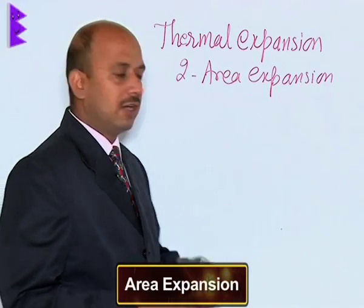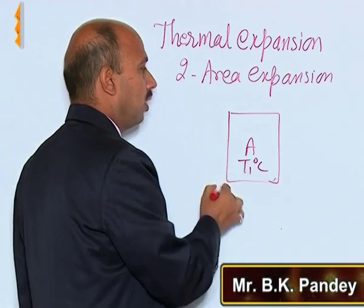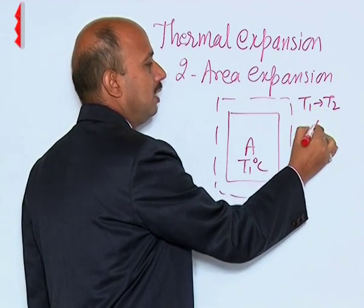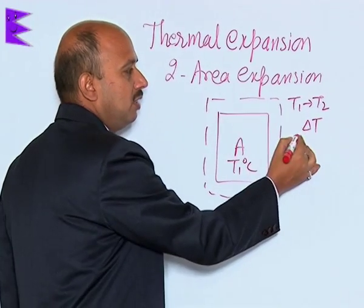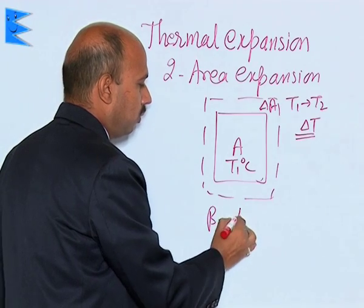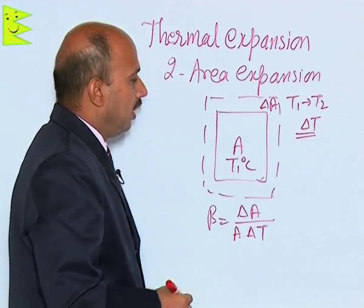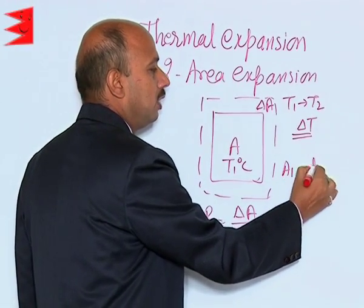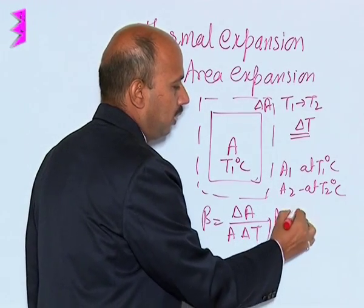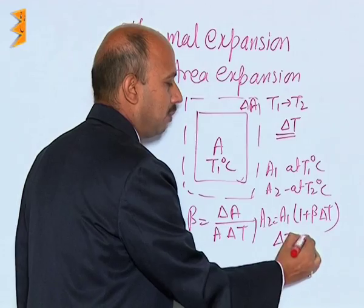The second one is area expansion. Suppose you have a metal sheet whose original area is A at temperature T1 degrees Celsius. When you increase the temperature from T1 to T2, the increase in temperature is delta T and the increase in area is delta A. We can write beta equals delta A divided by A times delta T. If A1 is the area at T1 and A2 is the area at T2 degrees Celsius, then A2 equals A1 times (1 plus beta times delta T), where delta T is T2 minus T1.